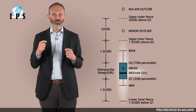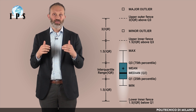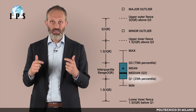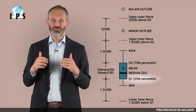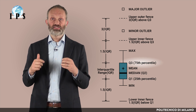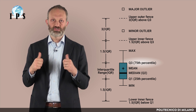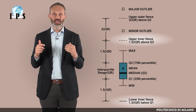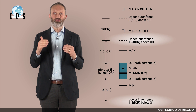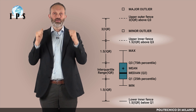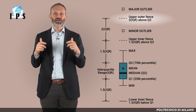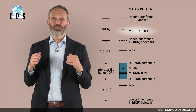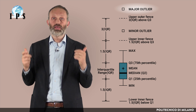The median is the central observation — that is, 50% of the data points are below and the other 50% are above the median, which is also called Q2 or second quartile. Q1, or lower quartile, separates the lowest 25% observations from the others. Q3, or upper quartile, separates the highest 25% observations from the others. The distance between Q1 and Q3 is called the interquartile range. The inner fences are defined at a distance of 1.5 times the interquartile range below Q1 and above Q3. The outer fences are 3 times the interquartile range from Q1 and Q3.